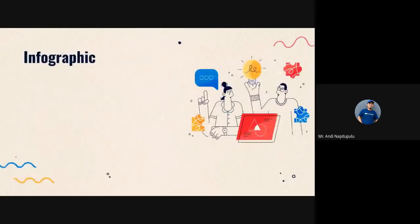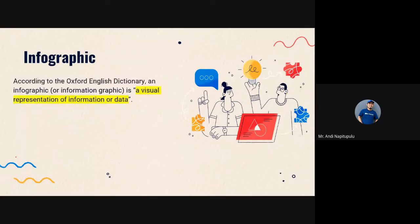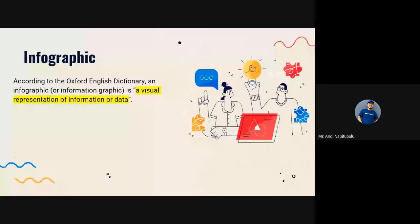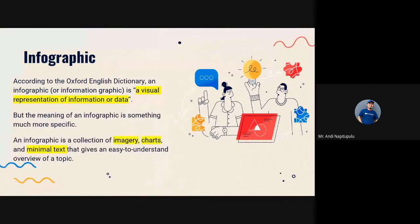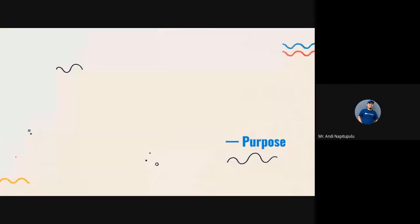So from the name, infographic means 'info' and 'graphic'. According to the Oxford English Dictionary, an infographic — or information graphic — is a visual representation of information or data. Not only information, but also data, which can include numbers and text. You can also say an infographic is a collection of imagery, charts, and minimal text to give understanding about a topic.